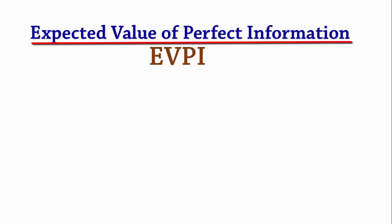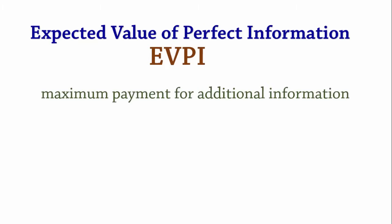The expected value of perfect information is the maximum amount you will be willing to pay for additional information about a decision problem. That is, if we have perfect information about the state of nature before the decision is made, how much is this information worth?